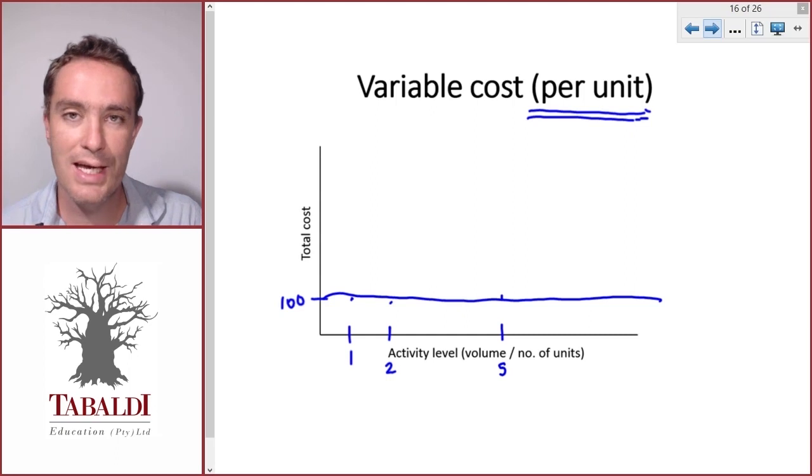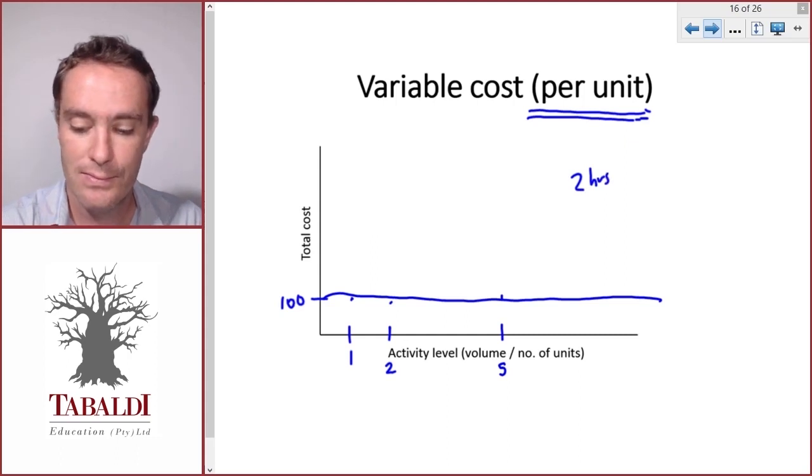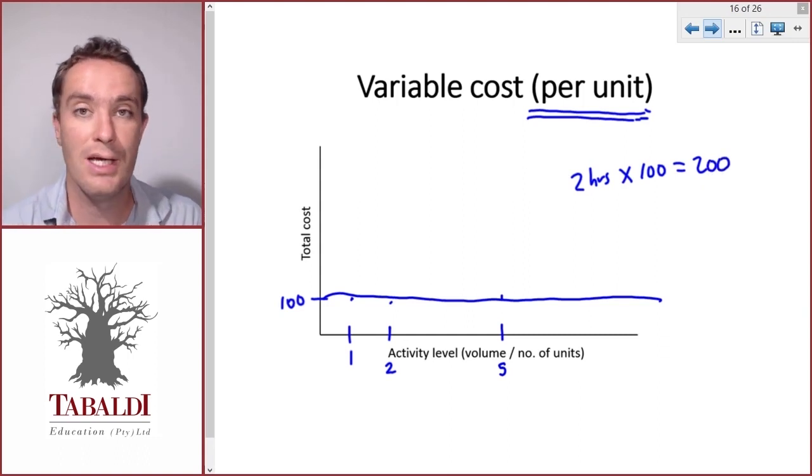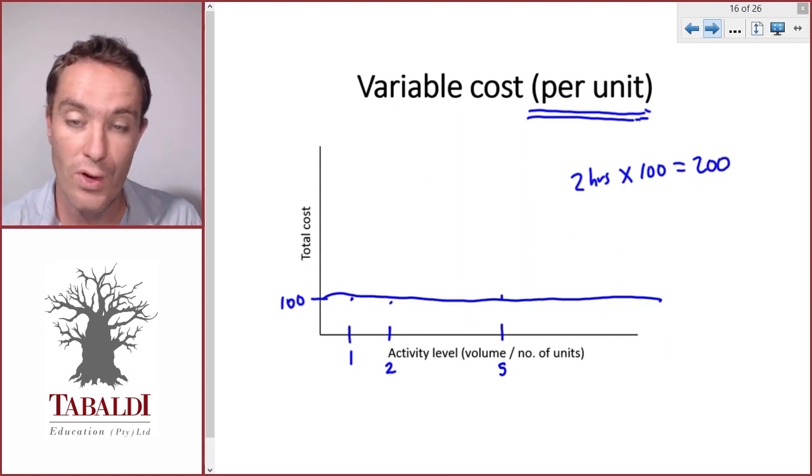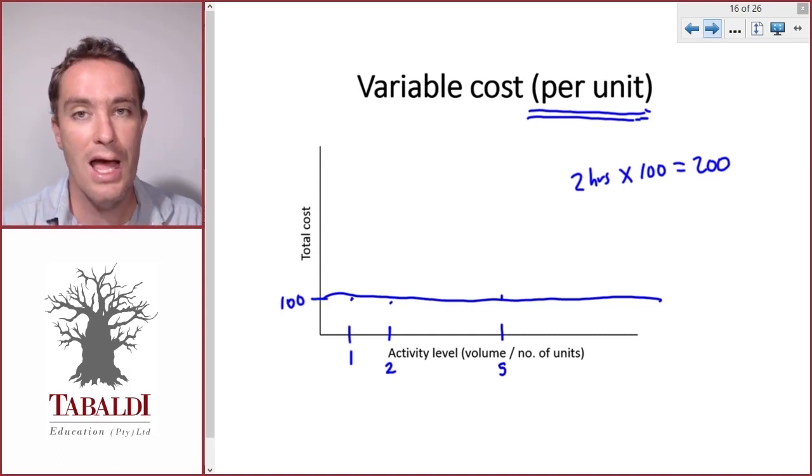And that would be the same for John's cost. So John might spend two hours per table and charge us a hundred per hour. So it'll cost us two hundred per table for direct labor. And that would stay two hundred per table regardless of the number of tables we produce.